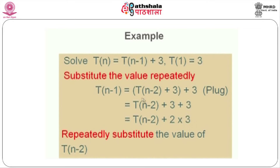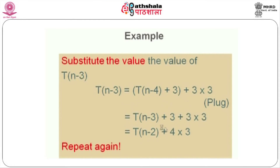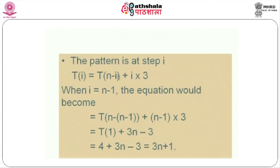Now I find the value of T(n-2): substituting again gives T(n) = T(n-3) + 3×3. If we keep on repeating this, the expression at the ith step becomes T(n) = T(n-i) + i×3. If I substitute i = n-1 into this equation, after simplification it comes as 3n + 1. This is the solution of this particular recurrence equation. This method is highly popular for solving linear recurrence equations.